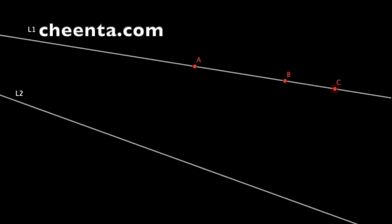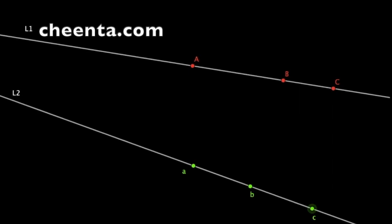Let's take a straight line, in fact take another one. Suppose the points A, B, C are in the first one and small a, small b, small c are in the second one.